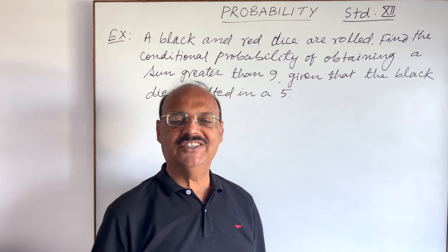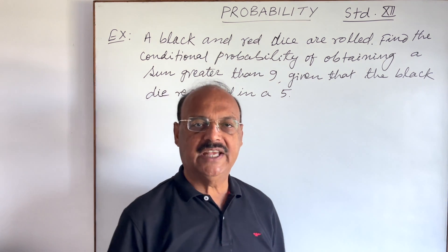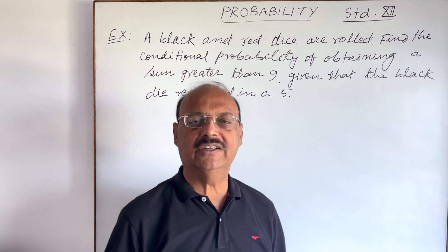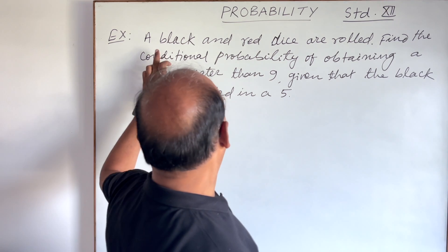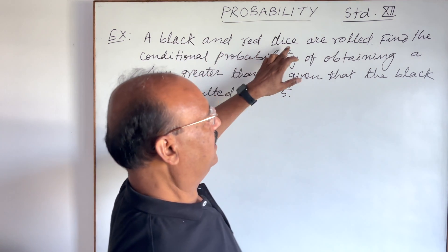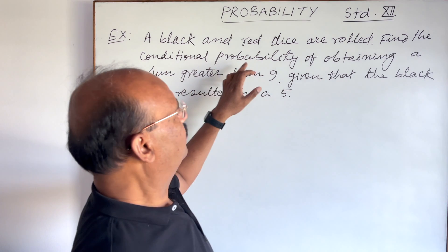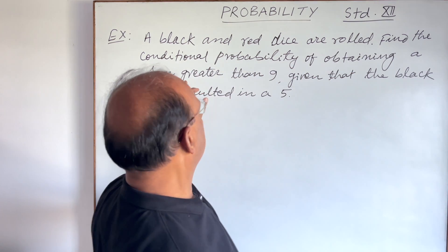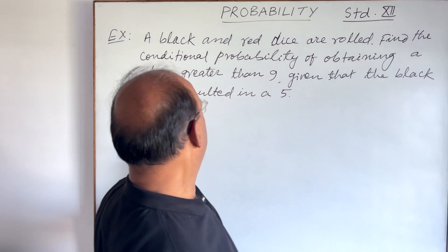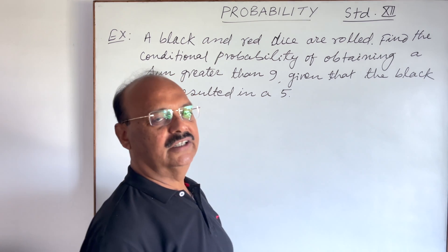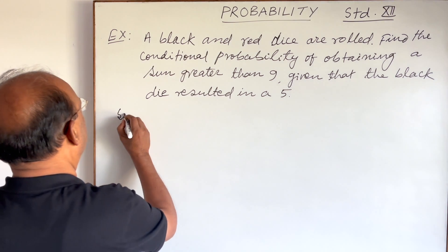Welcome students. Let us see a very interesting question from the chapter Probability. The question has been taken from the NCERT book of Class 12. The question is: a black and red dice are rolled. Find the conditional probability of obtaining a sum greater than 9, given that the black die resulted in a 5.